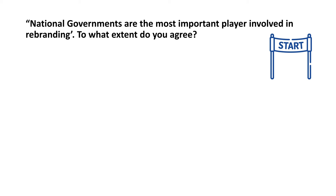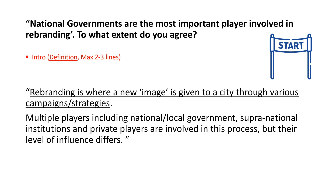The question is at the top, and you can see in the right-hand corner where we are — whether it's the A* section or argument one or two. In my intro I'm going to write a definition and a maximum of two or three lines. Here I put the definition of rebranding and then I say that there are multiple players involved in the process but their level of influence differs. I'm not writing too much — I'm getting straight into the argument.